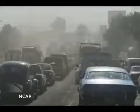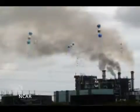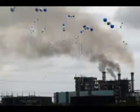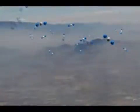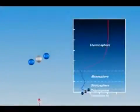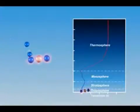Increased emissions of greenhouse gases, especially carbon dioxide, have different effects on different layers of the atmosphere. When carbon dioxide enters the lowest layers of the atmosphere, the troposphere, it absorbs infrared radiation from the Earth and then gives up that infrared radiation as heat through collisions with other molecules.